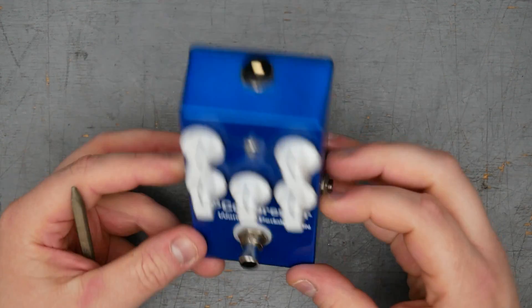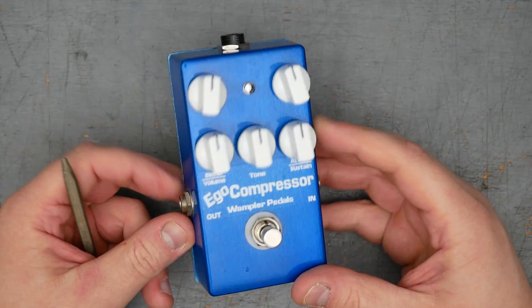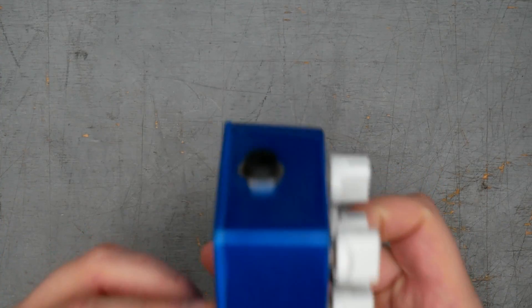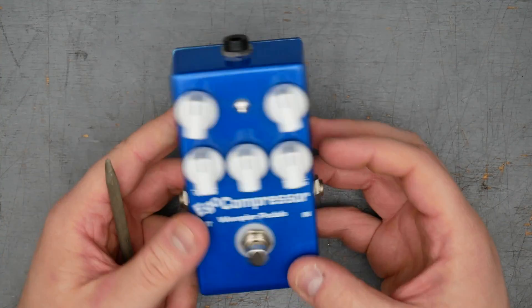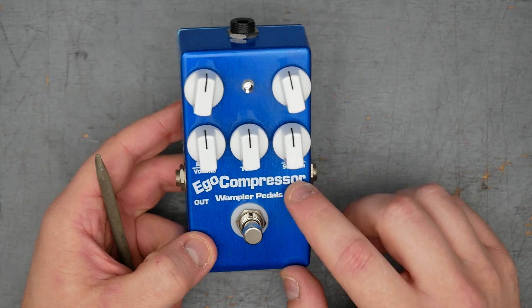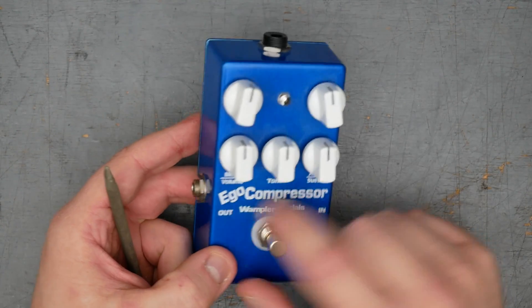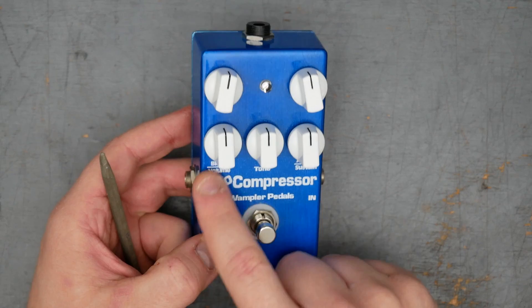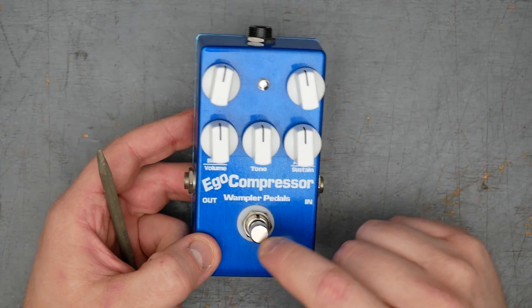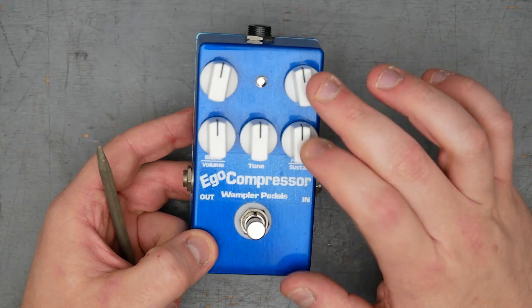As far as externals, we have a 125B size enclosure. It's got a nice clear powder coat, kind of sparkly, blue sparkle powder coat or some kind of lacquer. It might not be powder coat. There's a clear label here, actually a sticker that has the controls. Blend and volume are here on the left, tone control and then attack sustain on the right.